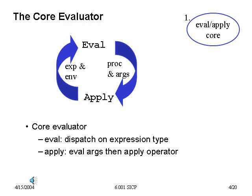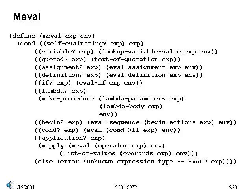Our convention is we'll use an eval that does dispatch on type — it checks the expression type, and based on that, sends the expression off to a particular procedure to handle that kind of expression. Our convention on apply is that it will first evaluate the arguments, then apply the procedure that is the value of the first argument to the values of the others. Here's our implementation of eval — this is also on the printout so you can have it available as we walk through all of this.